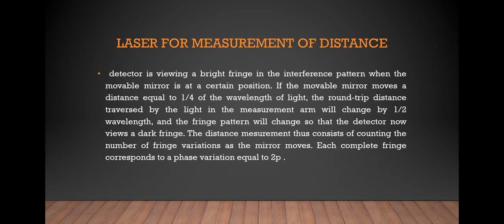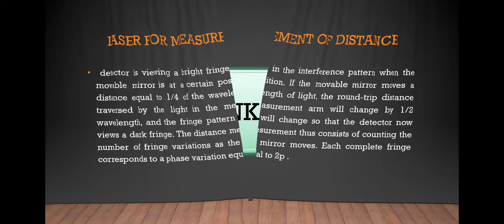The detector is viewing a bright fringe in the interference pattern when the movable mirror is at a certain position. If the movable mirror moves a distance equal to 1/4 of the wavelength of light, the distance measurement consists of counting the number of fringe variations as the mirror moves. Each complete fringe corresponds to a phase variation equal to 2π.